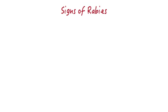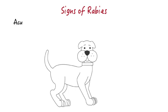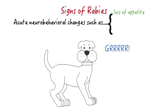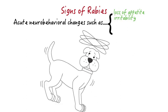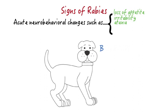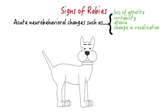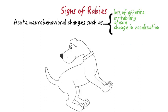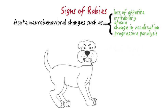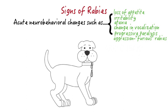Regardless of species, most rabies cases are characterized by acute behavioral changes, such as loss of appetite, irritability, ataxia, changes in vocalization, and progressive paralysis. Aggressive or vicious behavior — that is, furious rabies — may occur, but is not always seen.